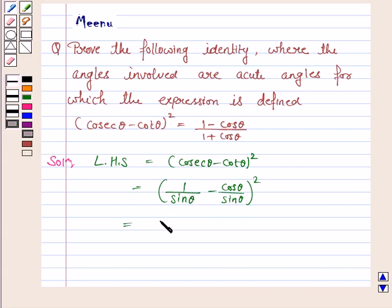So this is equal to 1 minus cos theta whole square upon sin square theta.